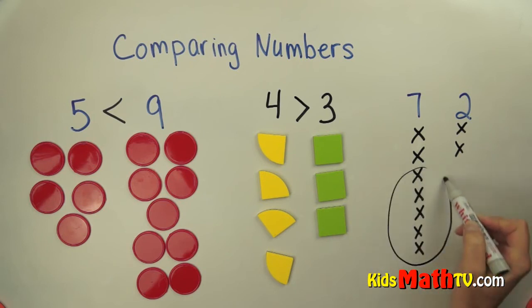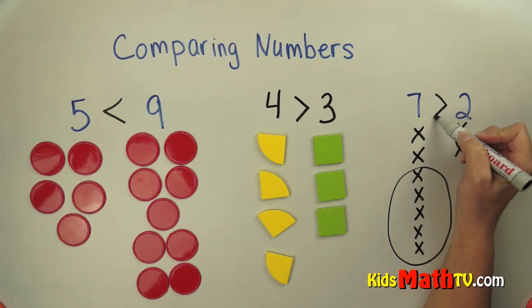Well, I can see that there are many more x's in seven than there are two. So seven is greater than two. And that's the end of our lesson on comparing numbers.